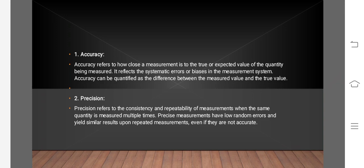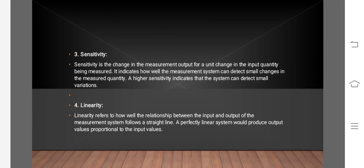Precision refers to the consistency and repeatability of measurements. When the same quantity is measured multiple times, precise measurements have low random error and yield similar results upon repeated measurements, even if they are not accurate.